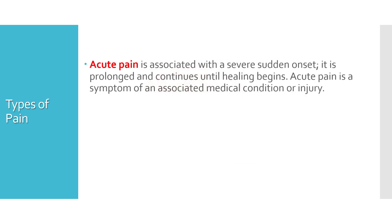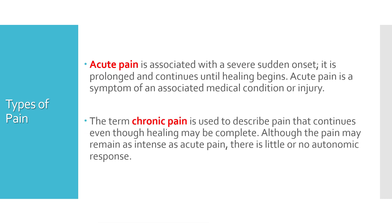Now let's look at the types of pain. Acute pain is associated with a severe sudden onset; it is prolonged and continues until healing begins, and it is a symptom of an associated medical condition or injury. Chronic pain, on the other hand, is a pain that continues even though healing may be complete. Although the pain may remain as intense as acute pain, there is little or no autonomic response. Another definition of chronic pain is a pain that has lasted longer than three months.